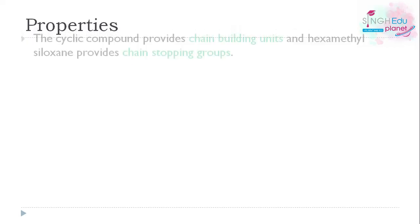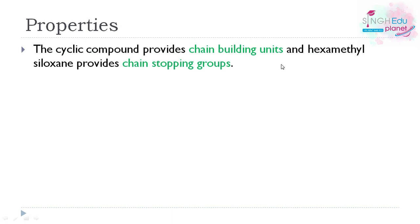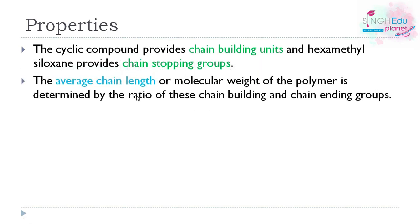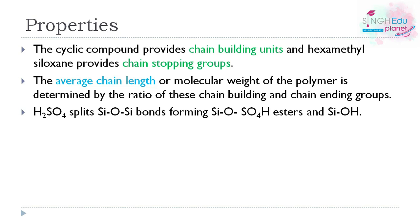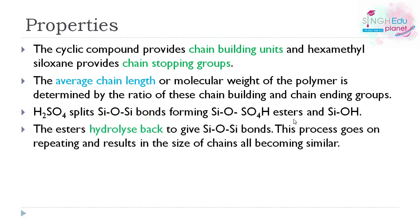Looking at the properties: the cyclic compounds provide chain building units and hexamethylsiloxane provides chain stopping groups. The average chain length is determined by the ratio of chain building to chain ending groups. Sulfuric acid splits silicon-oxygen and silicon bonds, forming esters (SiOSO₄H) and silicon hydroxide (SiOH). These esters hydrolyze back to give silicon-oxygen-silicon bonds, and the process repeats until new chains form.